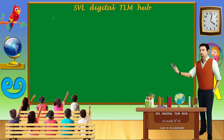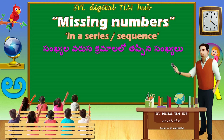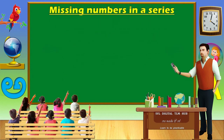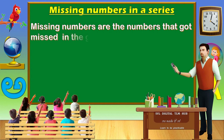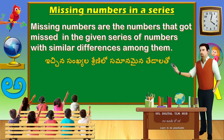In this class, we are going to learn about missing numbers in a series or sequence at primary level. Missing numbers are the numbers that got missed in the given series of numbers with similar differences among them.